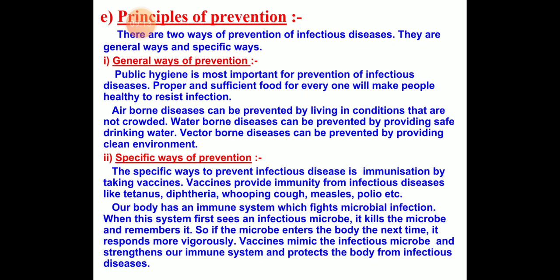Principle of prevention: There are two ways of preventing infectious disease. One is the general way of prevention and the other is the specific way. In the general way, public hygiene is most important. Proper and sufficient food for everyone will make people healthy and able to resist infection. Airborne diseases can be prevented by avoiding crowded conditions. Waterborne diseases can be prevented by providing safe drinking water. Vector-borne diseases can be prevented by providing a clean environment.